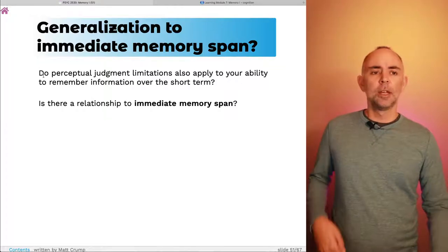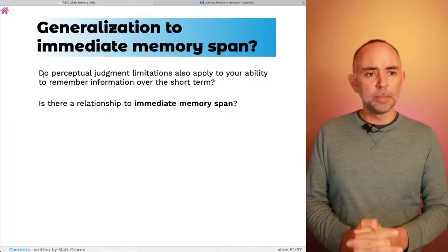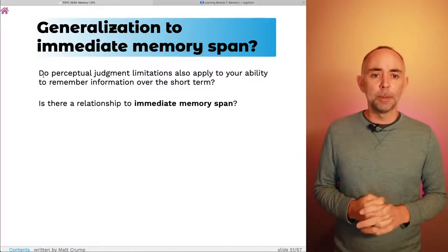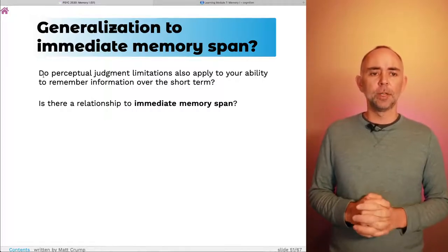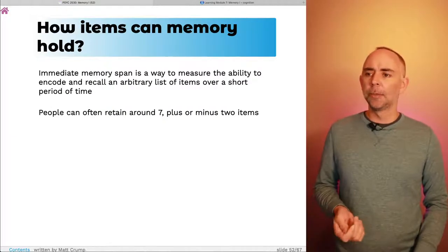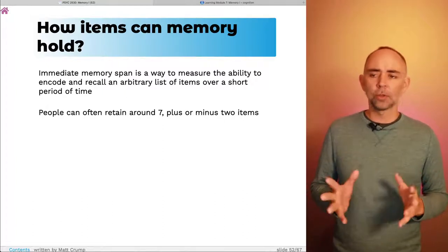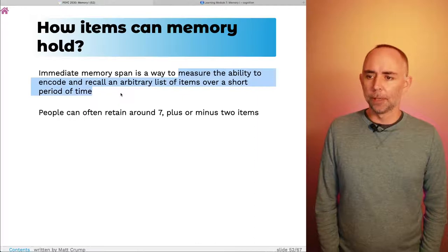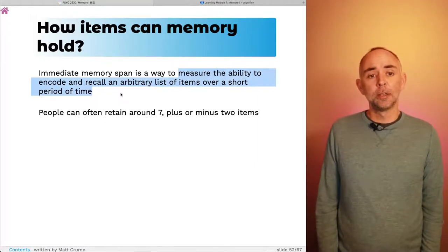George Miller asked whether these apparent principles would generalize to immediate memory span. So do perceptual judgment limitations also apply to your ability to remember information over the short term? Is there a relationship to immediate memory span? Now, what's immediate memory span? This is a question about how many items your memory can hold over the short term. It's a way to measure the ability to encode and recall an arbitrary list of items over a short period of time, and it's well known that people can often retain around seven plus or minus two items. If you want to test your own immediate memory span, let's do this right now. I'm going to read out a list of numbers. Just try to remember as many as you can. Don't write anything down just yet. I'm going to start right now and I'm going to read out a whole bunch of numbers.